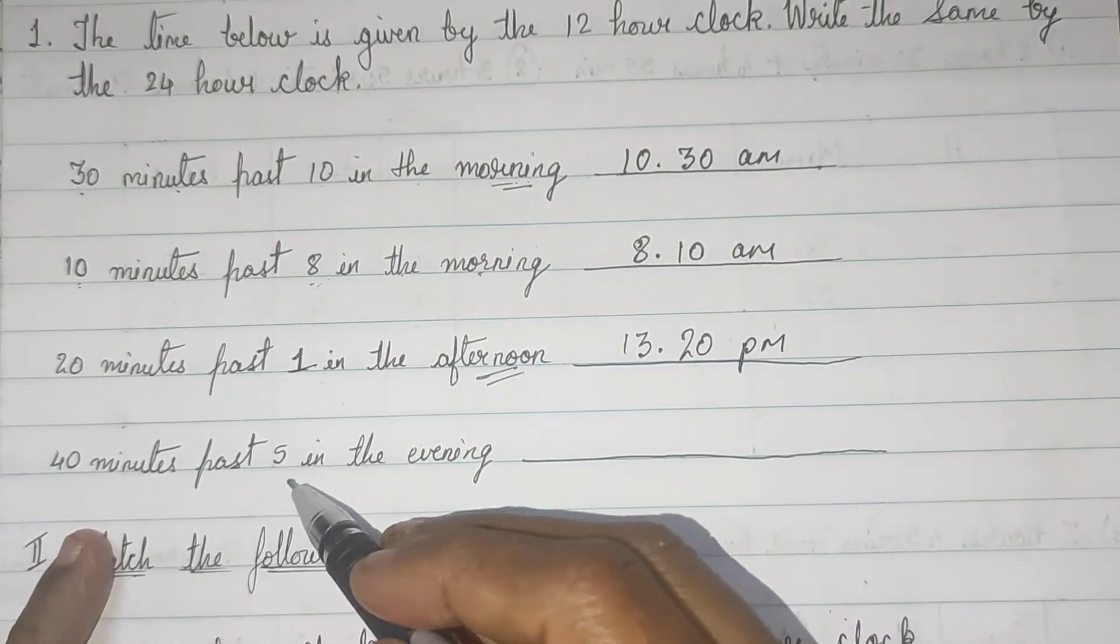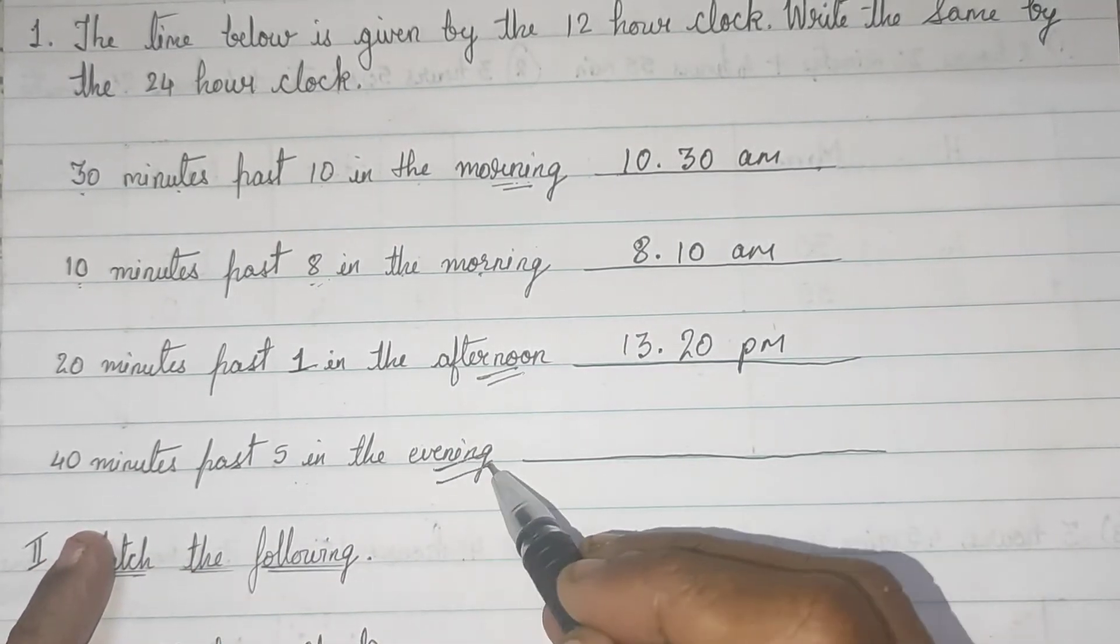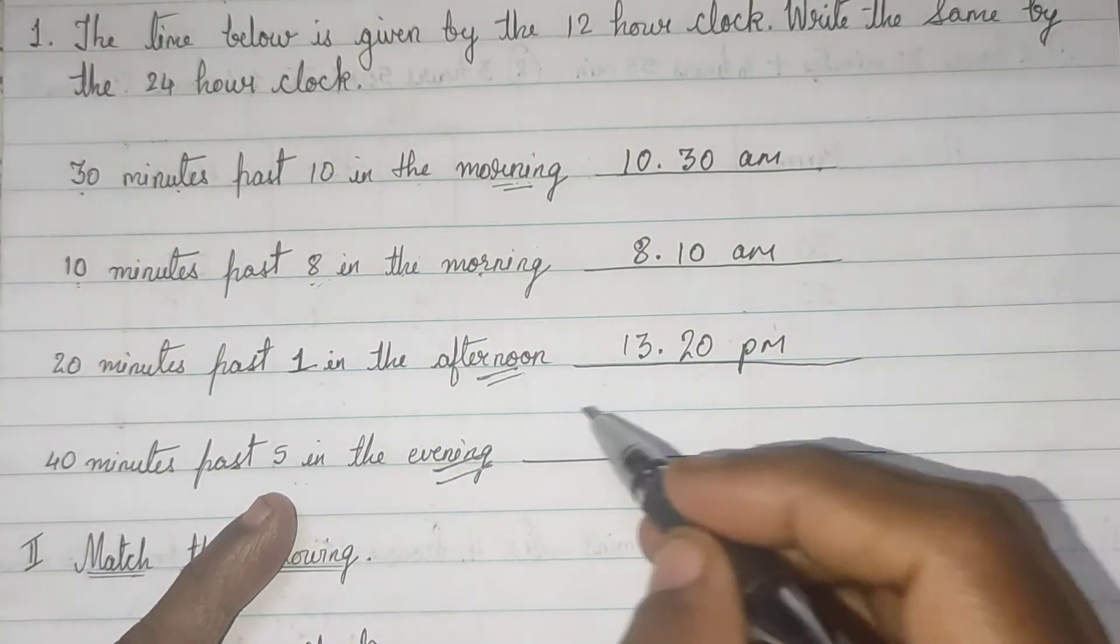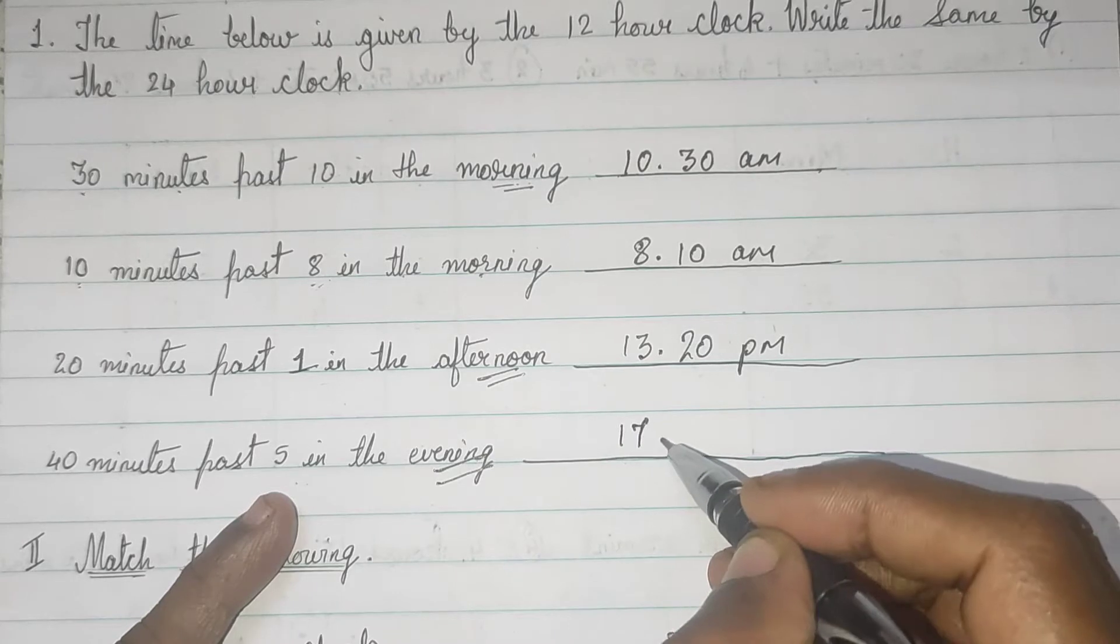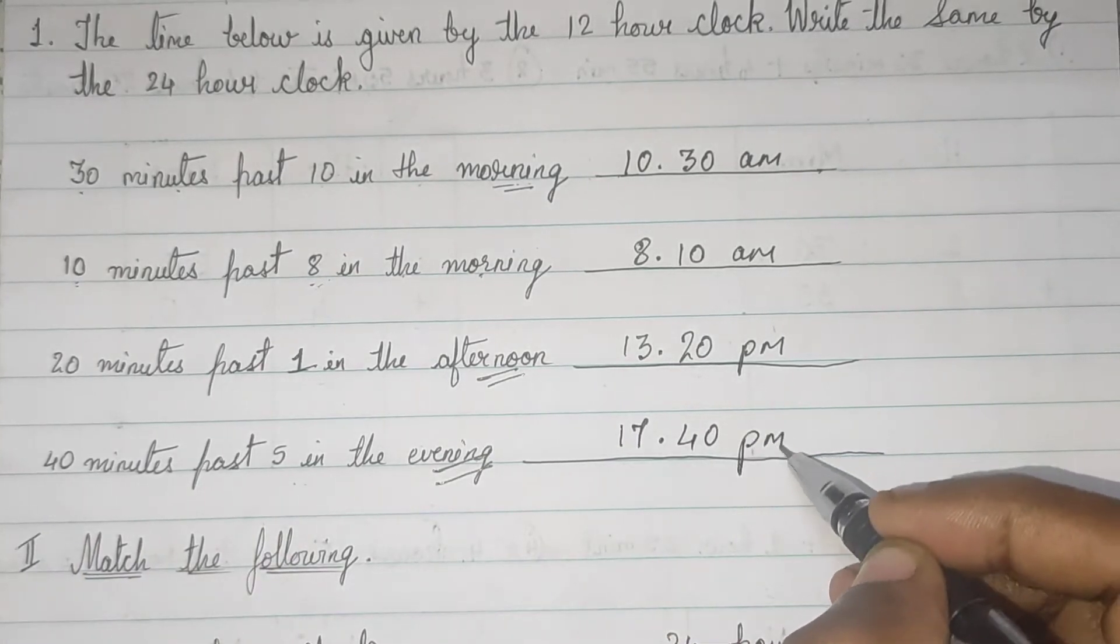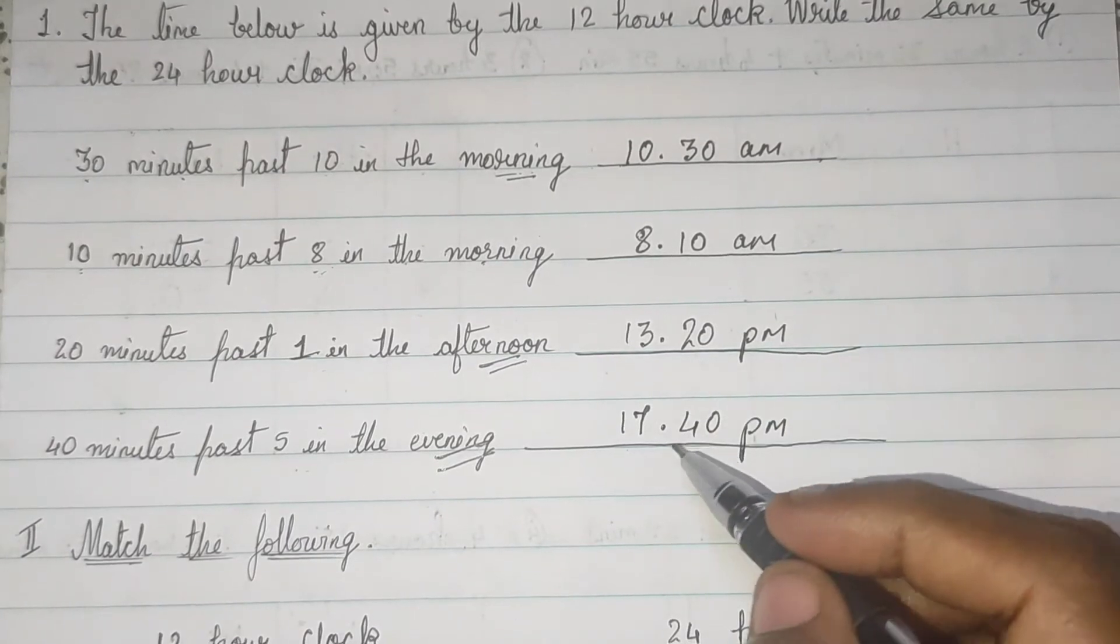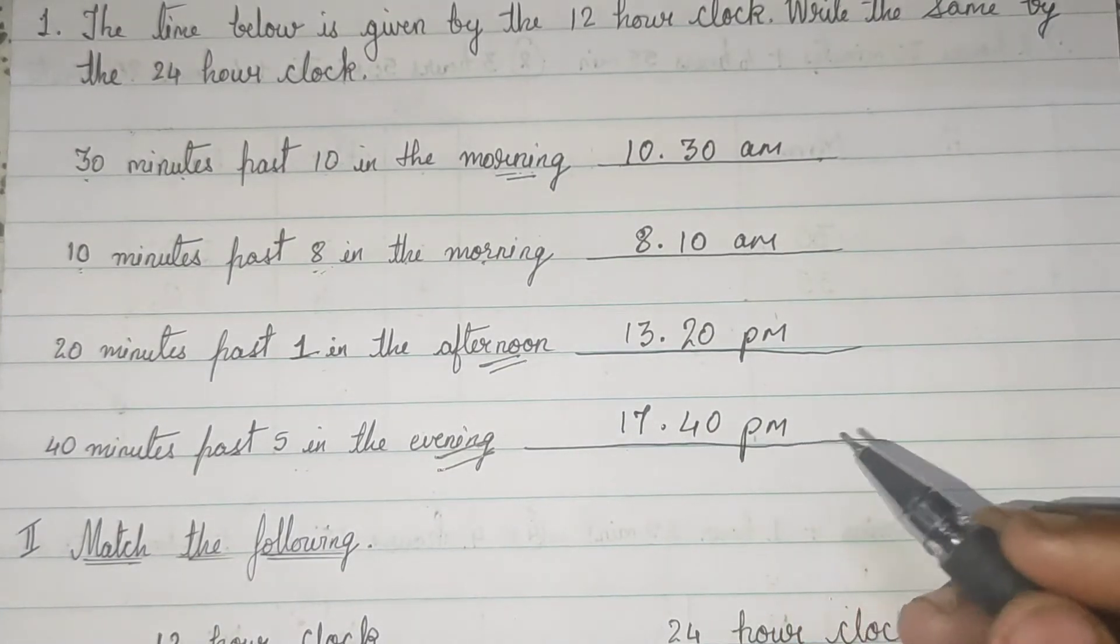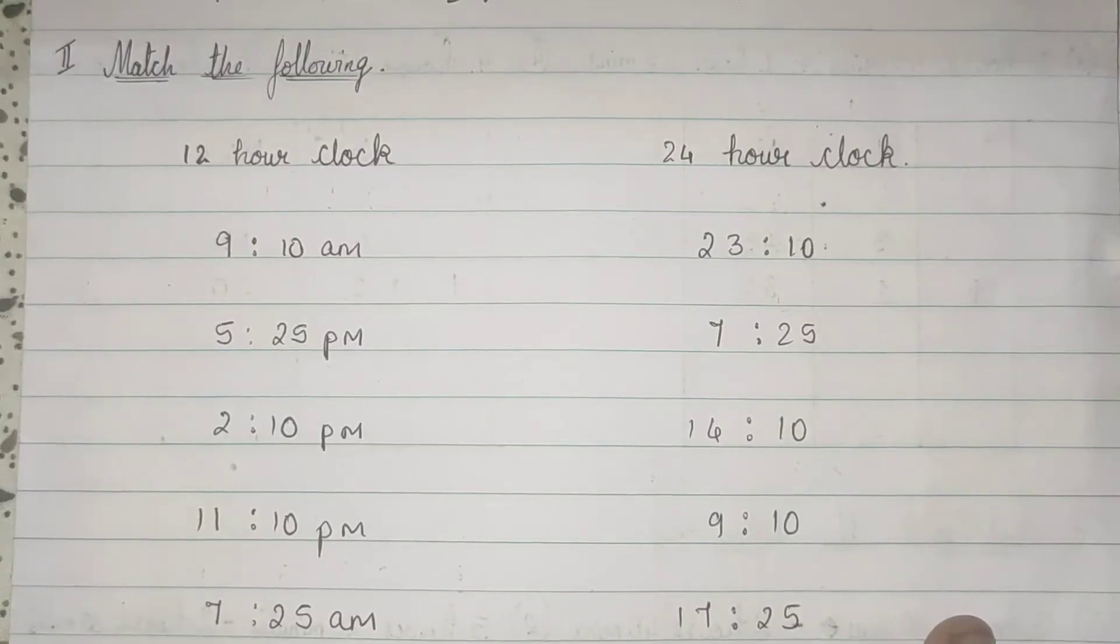40 minutes past 5 in the evening. So, 12 plus 5, 12 plus 5 is 17. And 40 minutes. This is evening. So, 5 bajke 40 minutes. Next question.